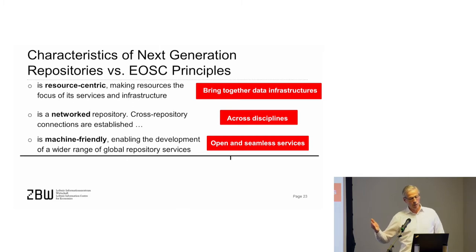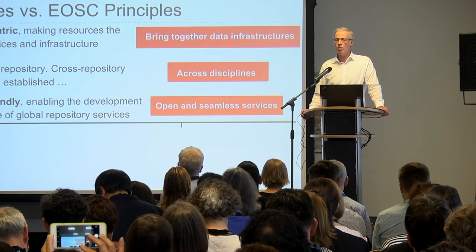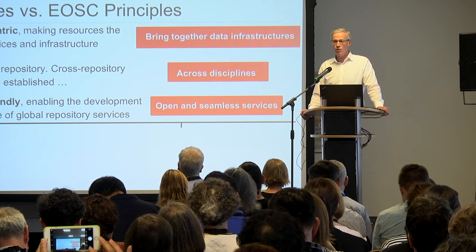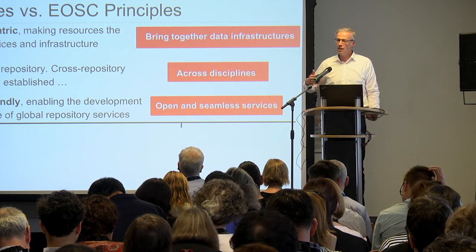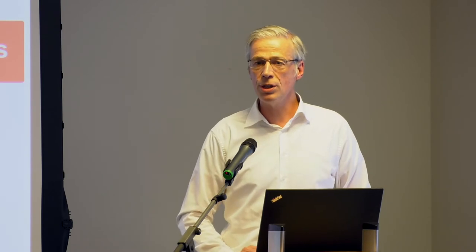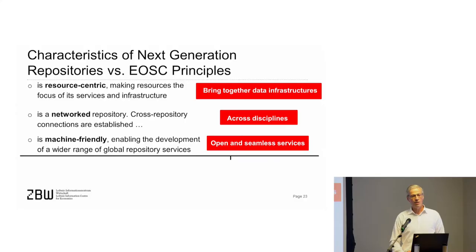Machine friendliness is one of the principles of the next generation repositories, and we require open and seamless services. Under seamless services we understand not only machine friendliness but also machine readability — we expect repositories to provide data that is machine-readable, relating to applying ontologies or systematic taxonomies. There are two characteristics I have not found in the other document, but they may be complementary rather than contradictory.